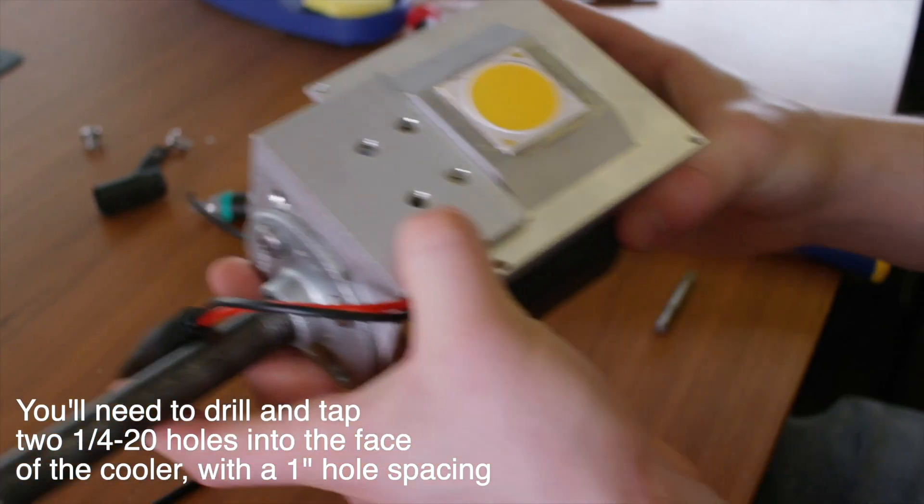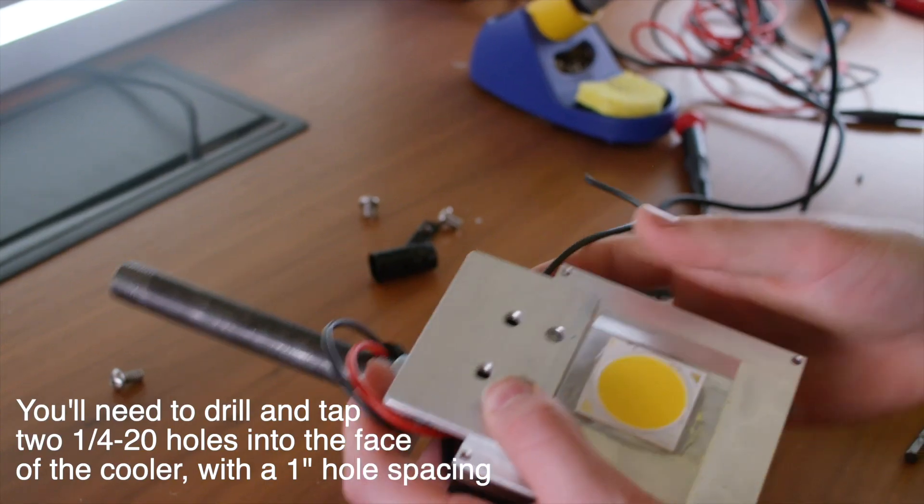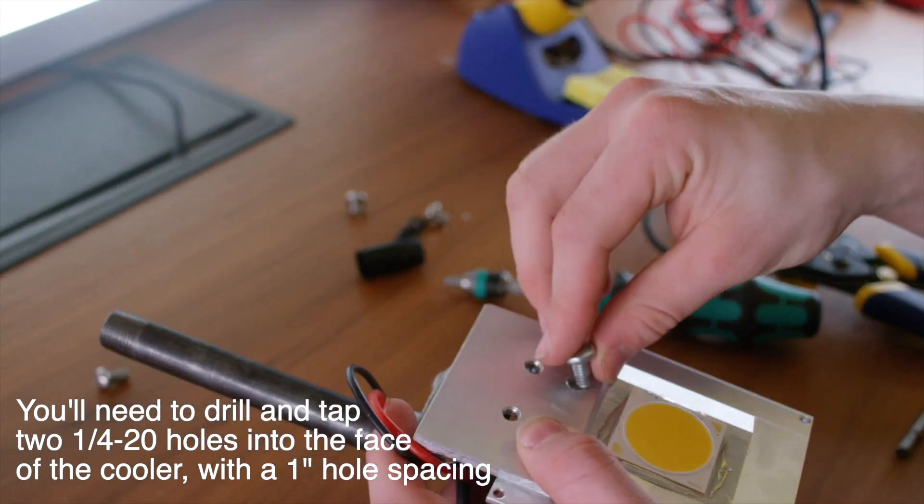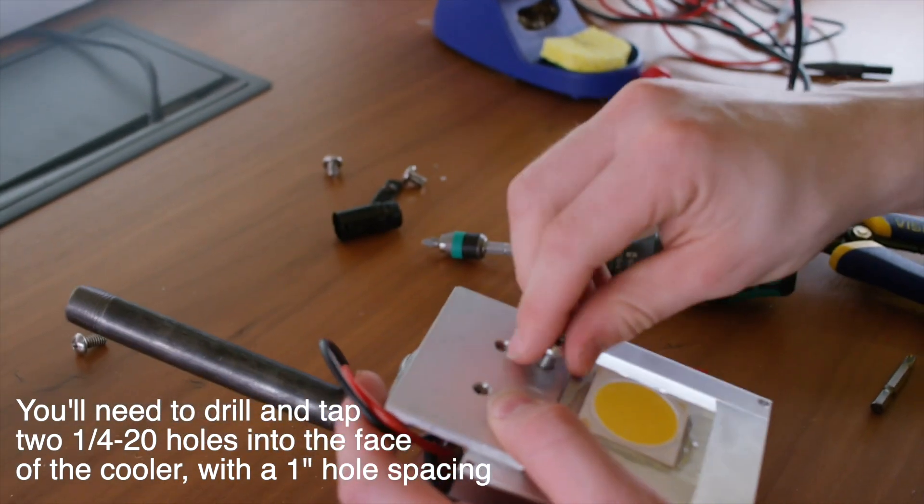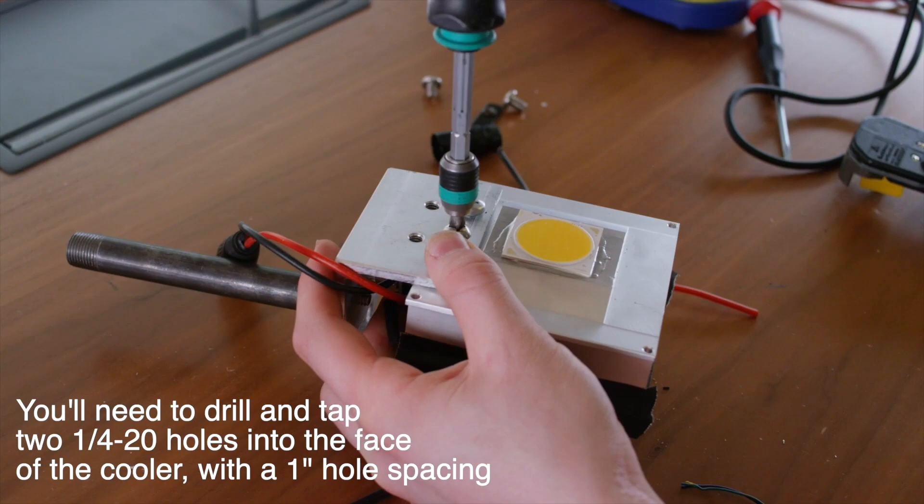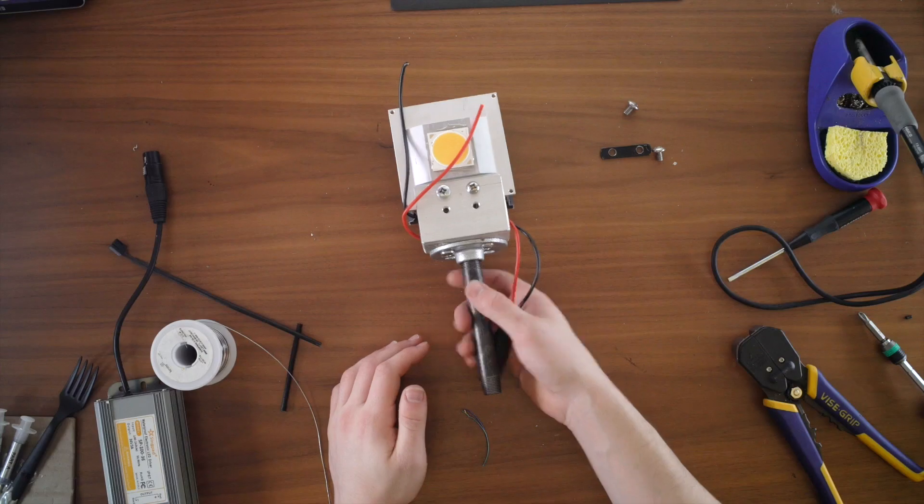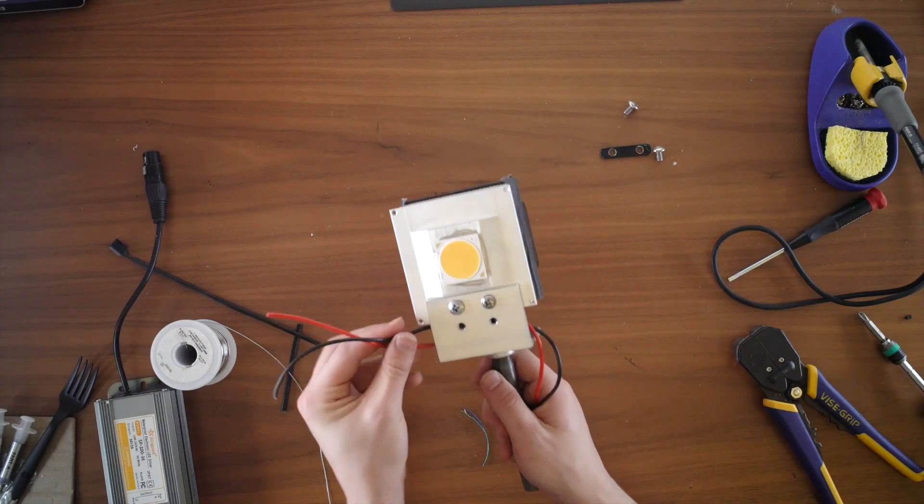Now I'm going to go ahead and mount this bracket to the cooler. I'm going to use these half inch quarter-20 screws. So now that we're done with that step, we can kind of see the light starting to come together.